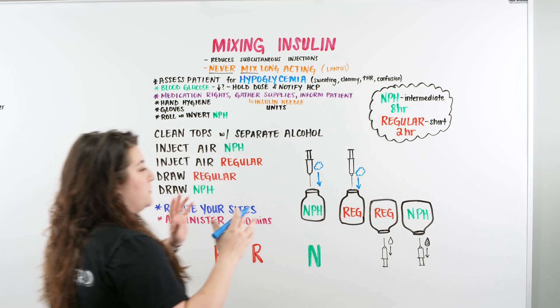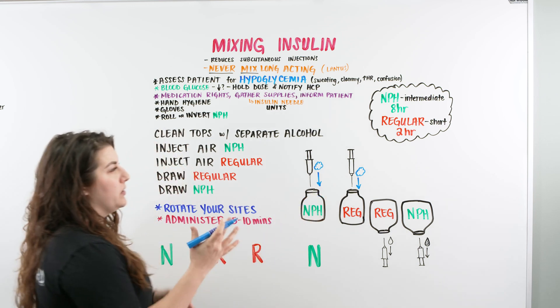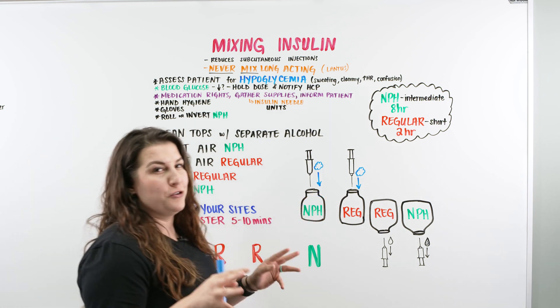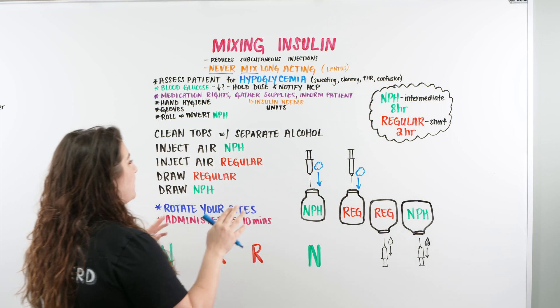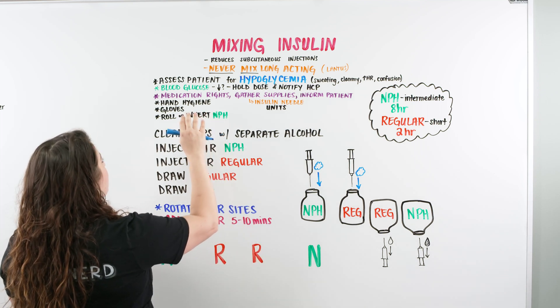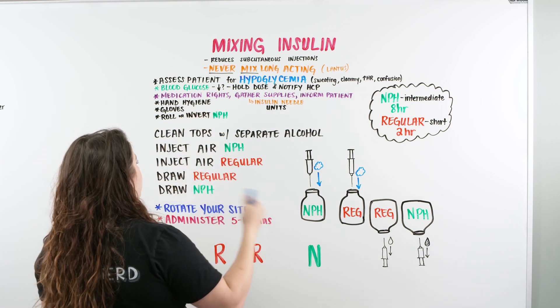So, what are we going to do? How are we going to do this drag and drop question, or how are we going to intervene if our student nurse is doing something wrong? The steps that we need to go through, besides the hand hygiene, the gloves, and then the rolling or the inversion of the NPH.